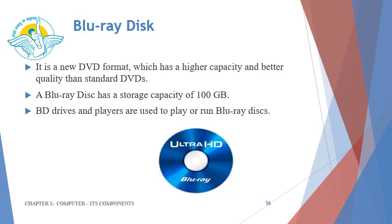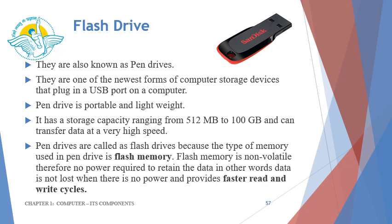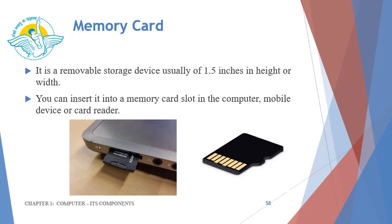The next type of storage device is a flash drive, also known as a pen drive. They are one of the newest forms of computer storage devices that plug into a USB port. A pen drive is a portable and lightweight device with a storage capacity ranging from 512 MB to 100 GB, and can transfer data at very high speed. Pen drives are called flash drives because they use flash memory, which is non-volatile — meaning no power is required to retain the data, so data is not lost when there is no power, and they provide faster read and write cycles. A memory card is a removable storage device usually 1.5 inches in height or width, which can be inserted into a memory card slot in a computer, mobile device, or card reader.